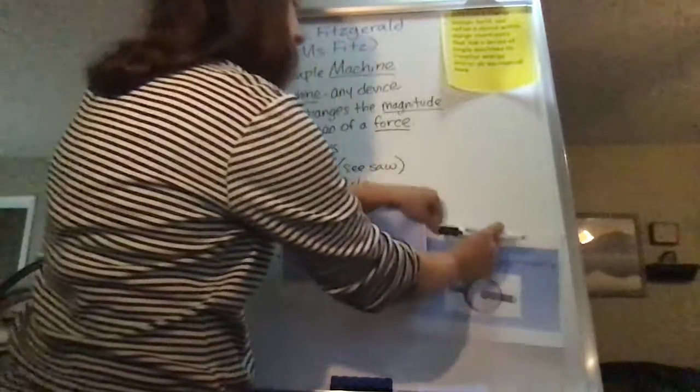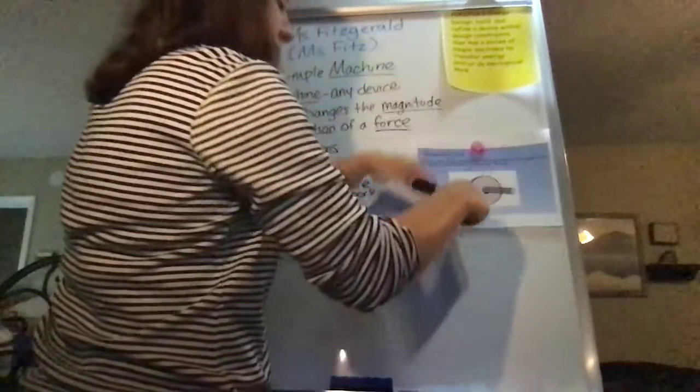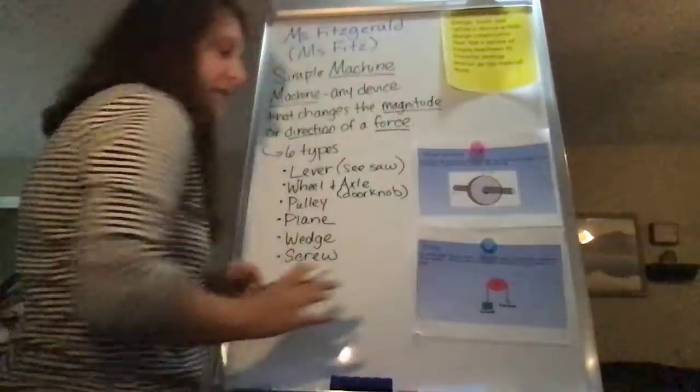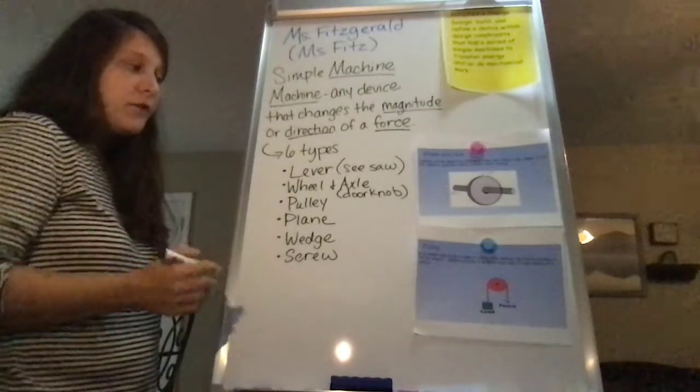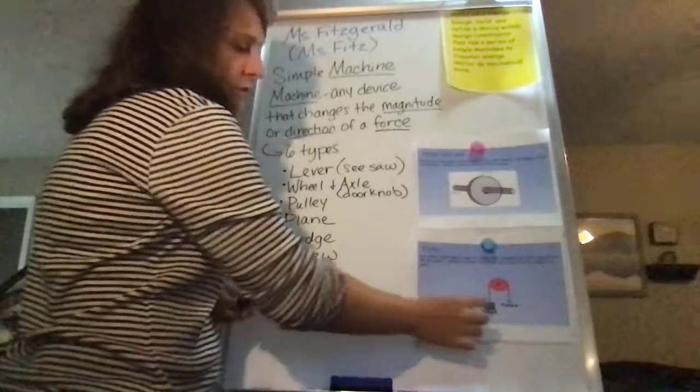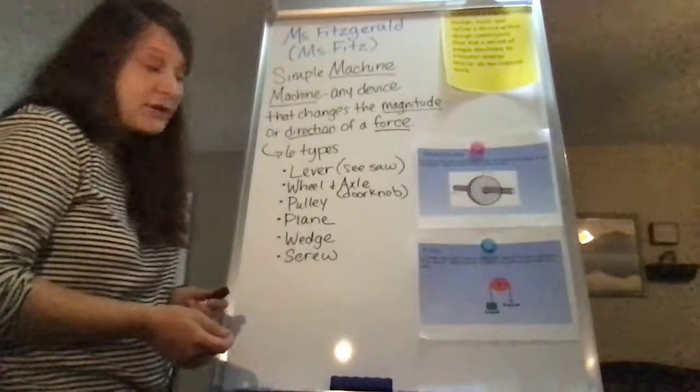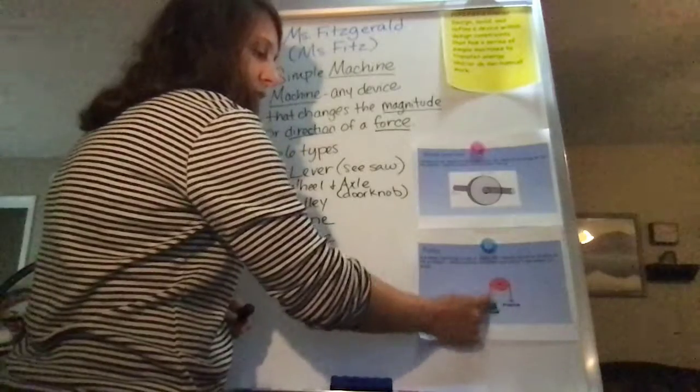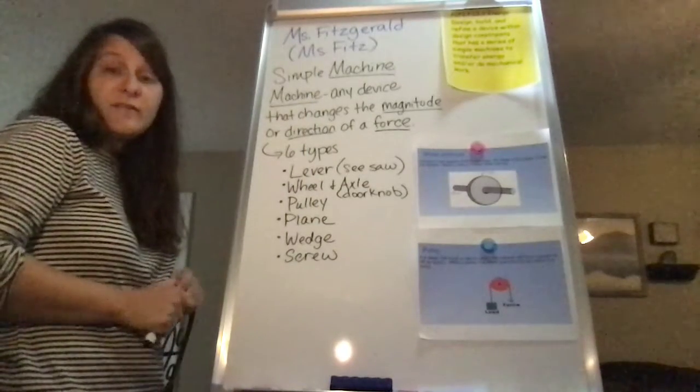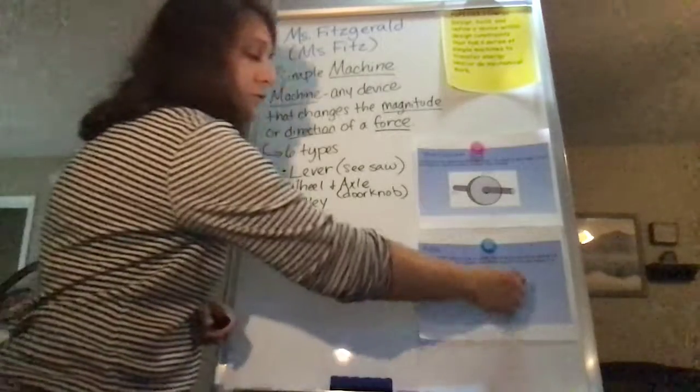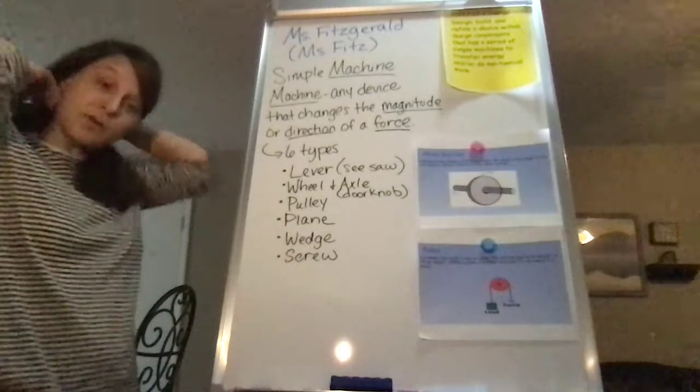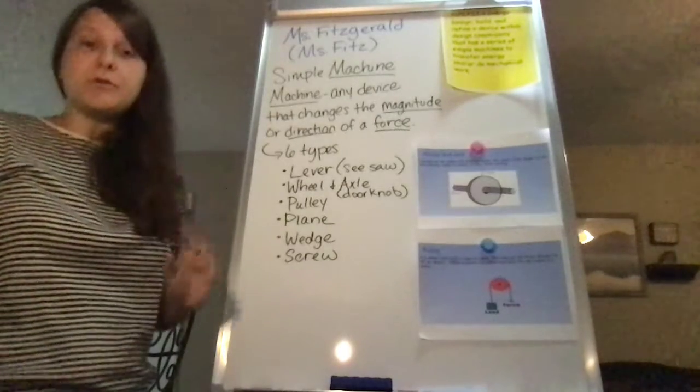Next, we have a pulley. So a pulley is a wheel that holds a rope or cable that reduces the force needed to lift an object. So you have something that you want to lift over here. You have a wheel and then you have a string over the wheel. That's considered a pulley. So when you pull down on this, it makes it easier to lift your load. So a flagpole would be an example of a pulley.